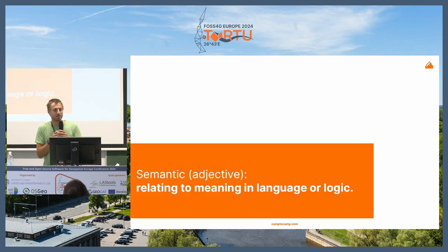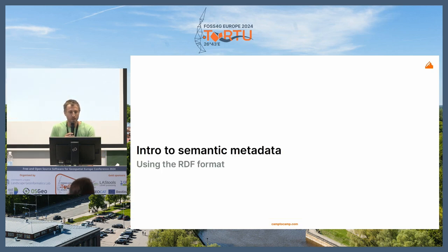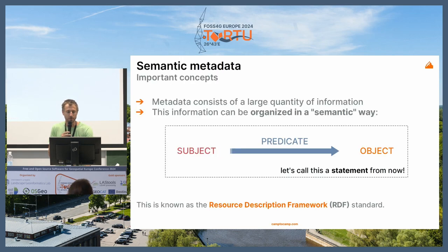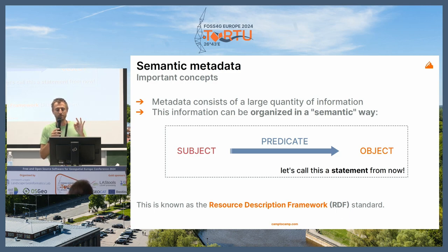Semantic, by pure definition, is the meaning — relating to the meaning of things. It's usually used in language or logic, but semantic data talks about what is the meaning and how we can describe precisely what the data is. To introduce it, I'll talk about RDF — Resource Description Framework — because there are different ways to represent semantics, but the easiest to understand is through RDF. RDF defines semantic as a triple: a subject, a predicate, and an object.